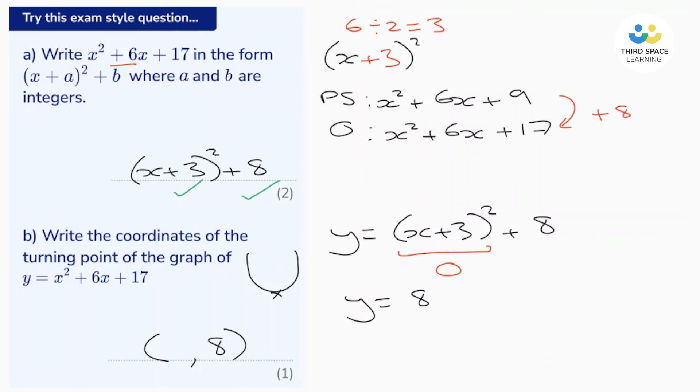Now if x + 3 equals 0 at the lowest point, that means that x must be negative 3. So that means that negative 3 is the x value and the turning point is (-3, 8). And that's worth a mark.